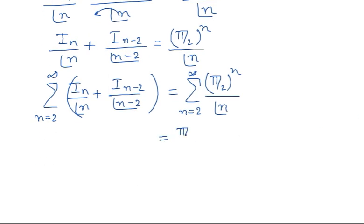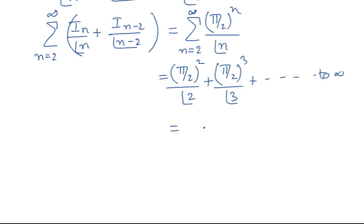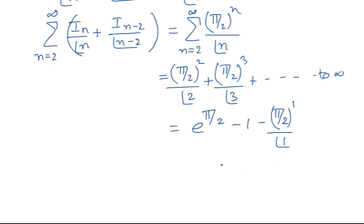Expanding this series gives (π/2)² / 2! plus (π/2)³ / 3! and so on to infinity. This is recognizable as the exponential series expansion of e^(π/2), but with the first two terms missing: the n=0 term which is 1, and the n=1 term which is π/2. So the final answer is e^(π/2) minus 1 minus π/2.